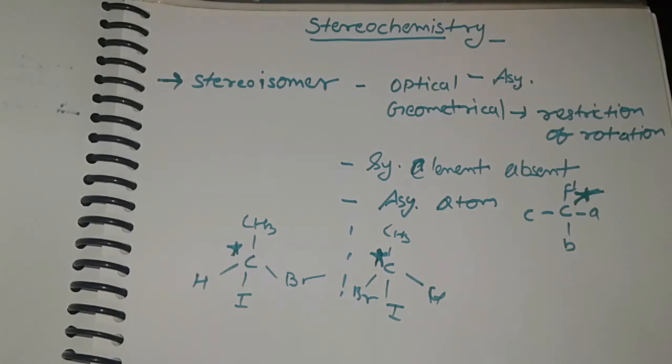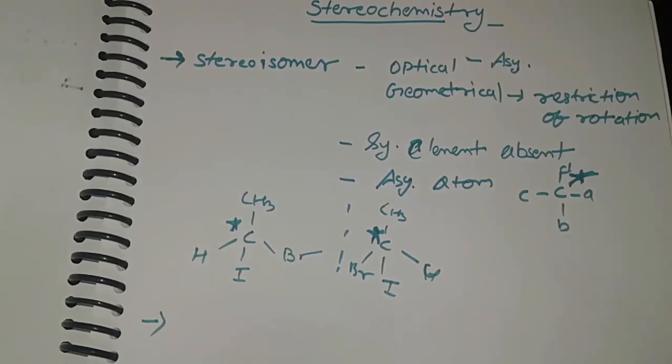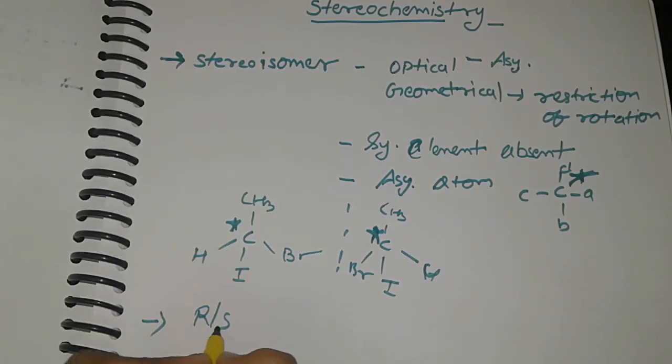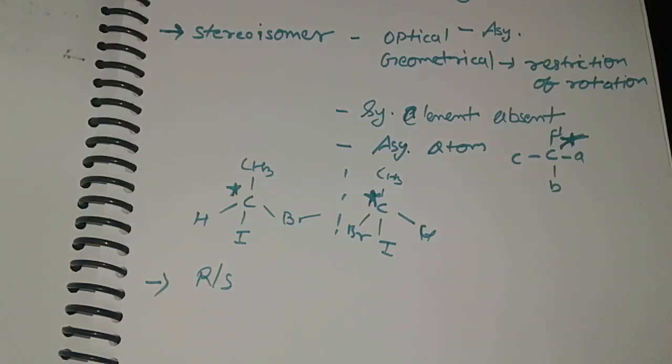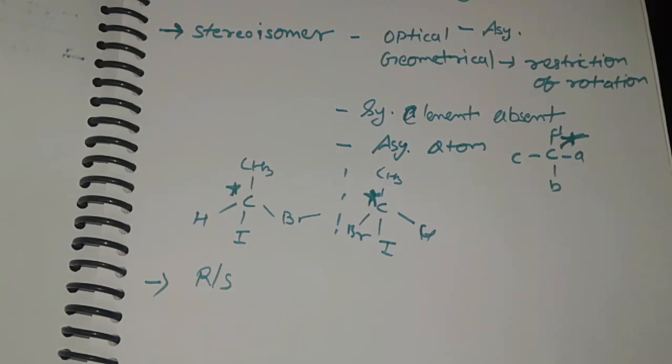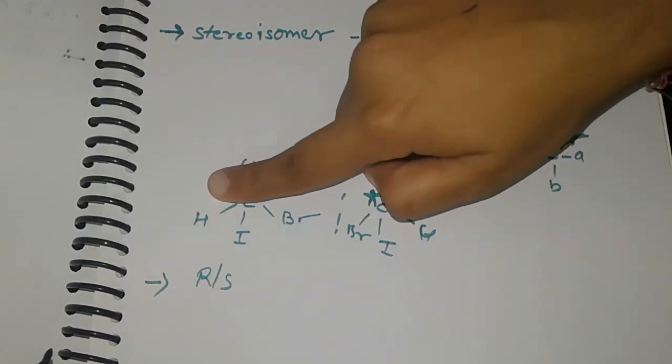For the chiral carbon, we use the RS nomenclature. The RS nomenclature is very important for all types of questions that come in examinations every year in every type of competition exam.